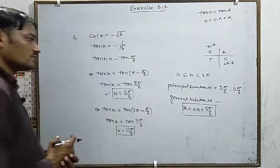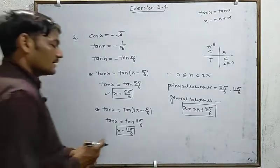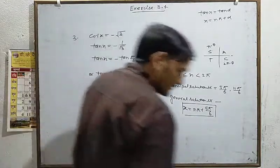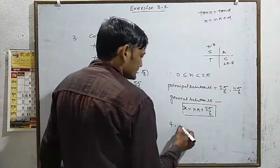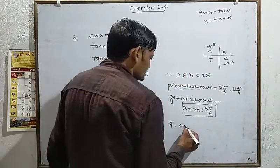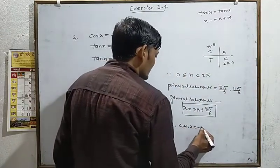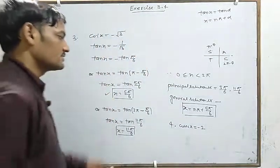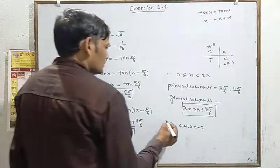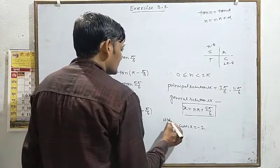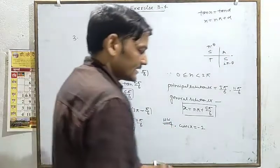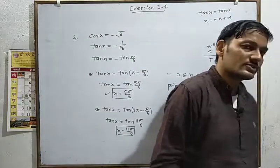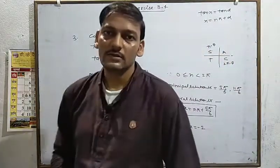Question number four: cos x = -1/2. Convert to sin: sin x = -1/2. Solve it in the same way as shown. This question is left as homework for you. After this, in the next video, we will start the next questions. That's all for today. Thank you.